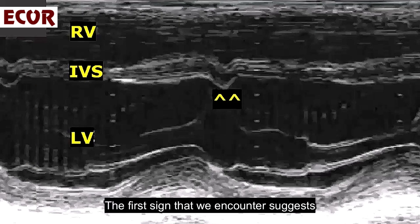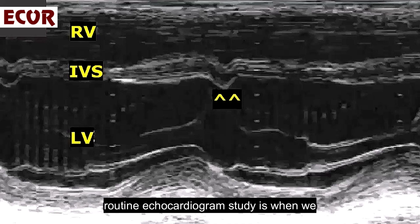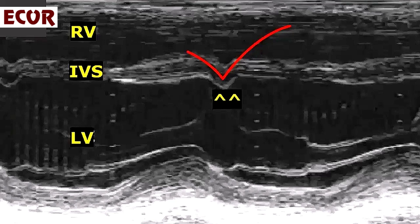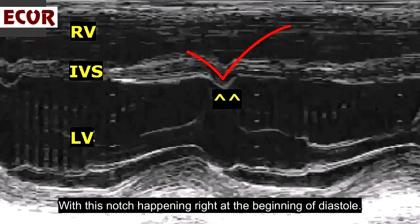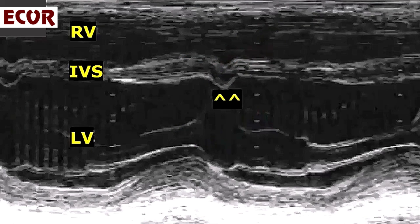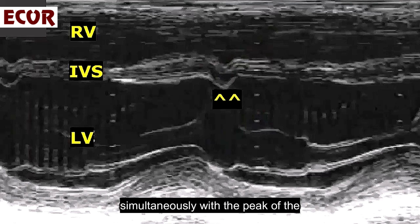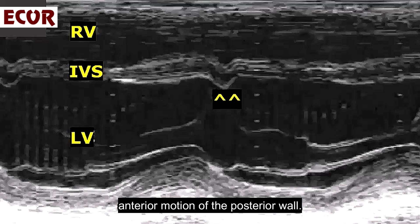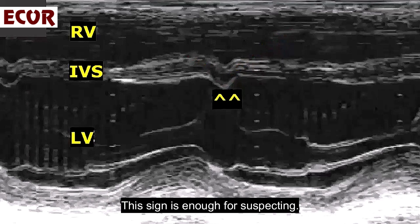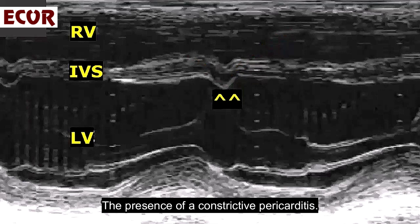The first sign suggestive of constrictive pericarditis encountered during a routine echocardiogram is when we take an M-mode to measure the left ventricle and find a characteristic paradoxical IVS motion with a notch occurring right at the beginning of diastole. Different from the normal notch, it is very sharp and has an aspect like the letter V. This sign alone is enough for suspecting the presence of constrictive pericarditis.